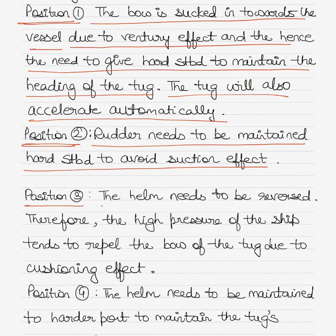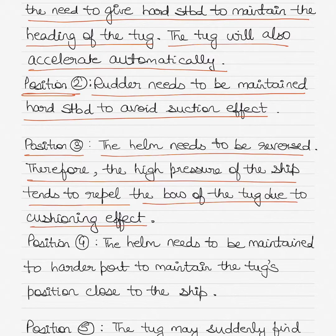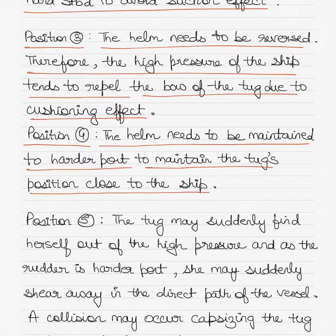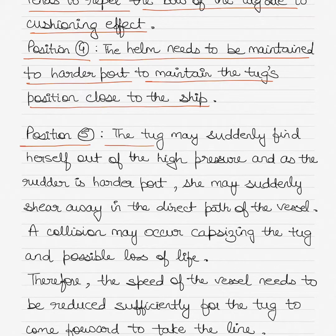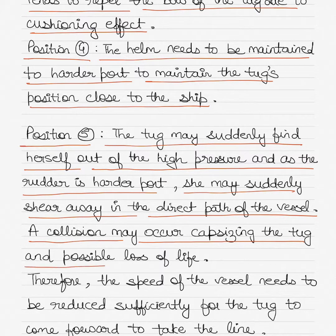In position three, the helm needs to be reversed as the high pressure of the ship tends to repel the bow of the tug due to the bow cushioning effect. In position four, the helm needs to be maintained at hard port to maintain the tug's position close to the ship. Finally in position five, the tug may suddenly find herself out of the high pressure zone and, as the rudder is hard port, she may suddenly shear away in the direct path of the vessel. A collision may occur, causing capsizing of the tug and possible loss of life.